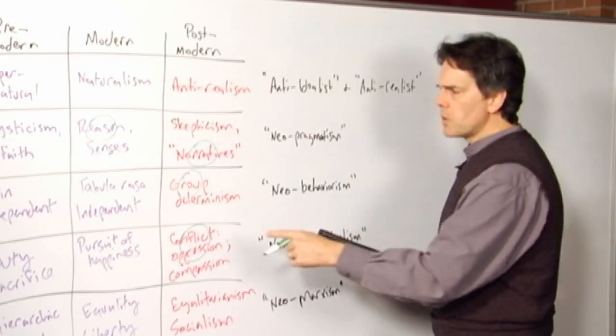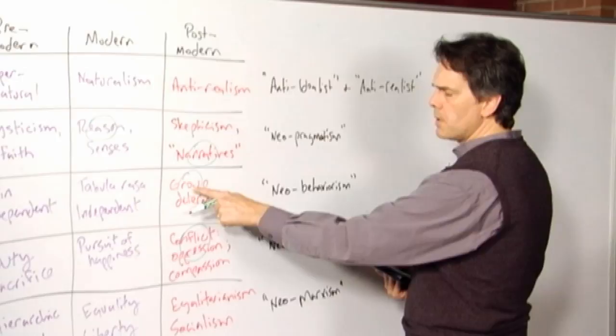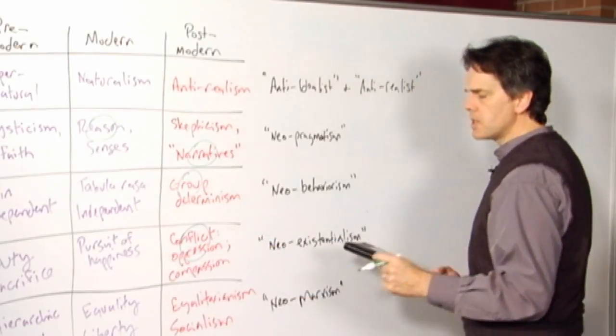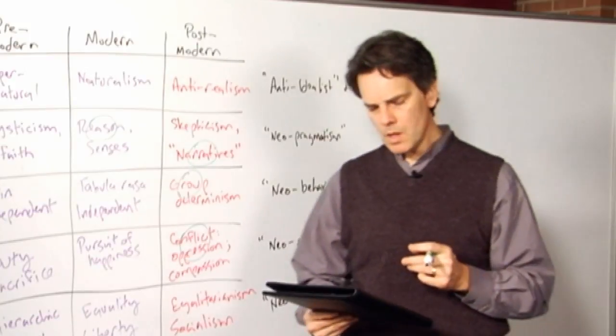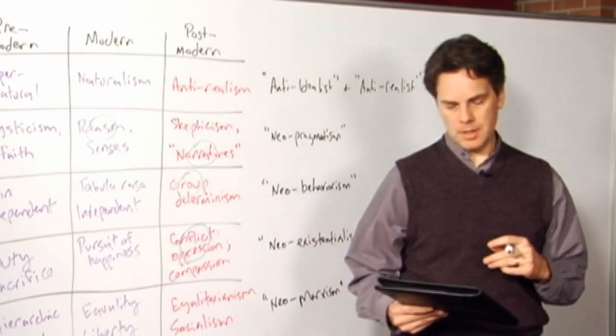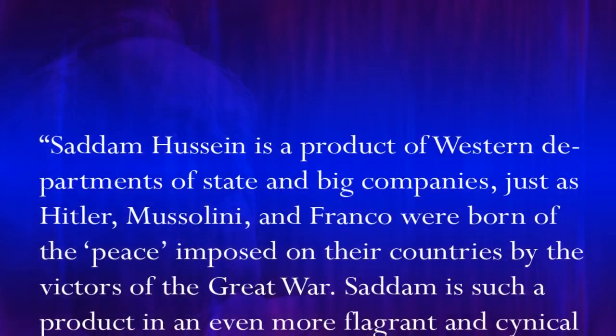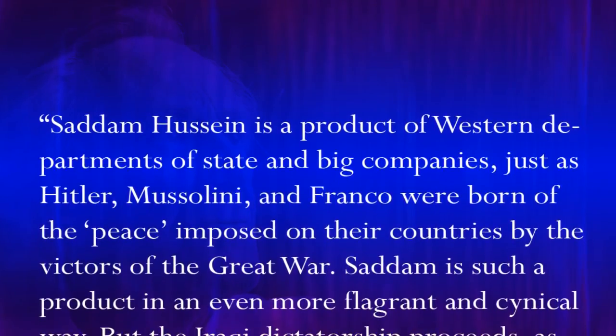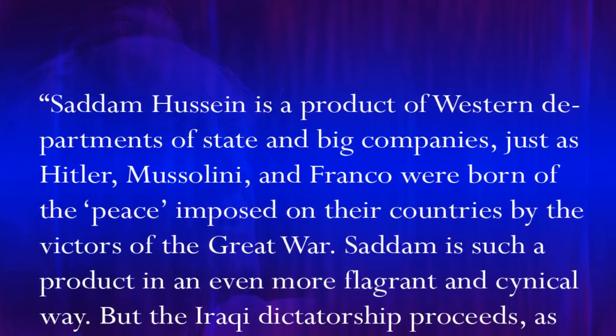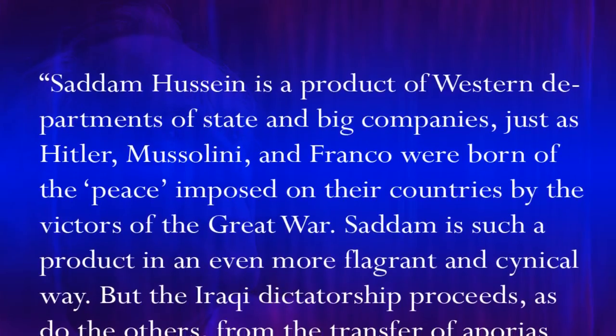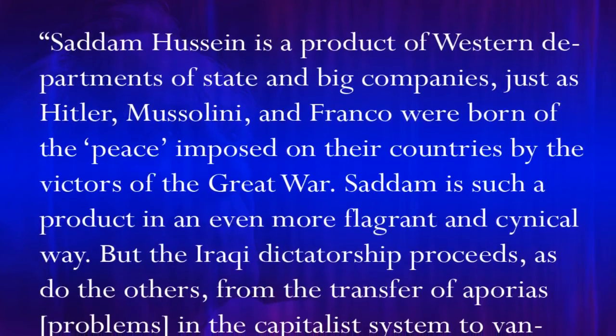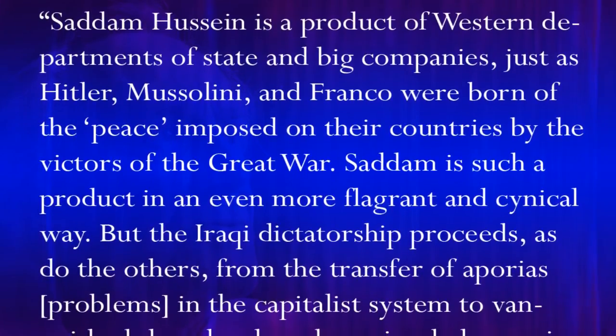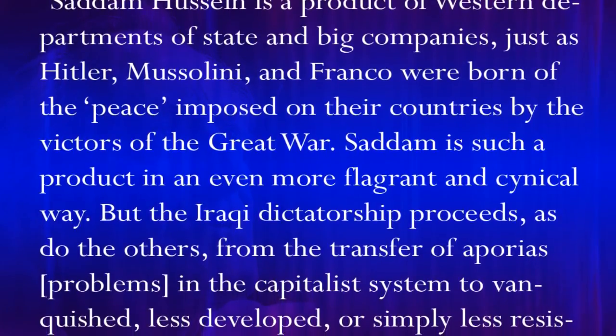But also in focusing on this issue of group membership being primary, conflict and oppression being dominant, take this quotation here. From the early 1990s, quote: Saddam Hussein, the former dictator of Iraq, is a product of Western departments of state and big companies, just as Hitler, Mussolini, and Franco were born of the peace imposed on their countries by the victors in the Great War.